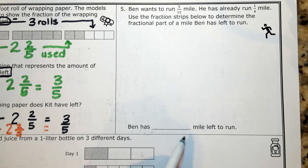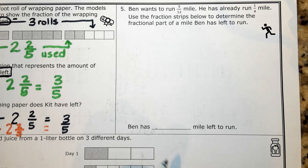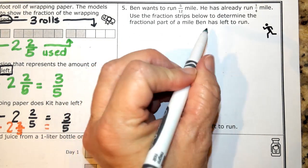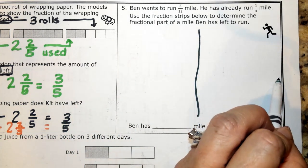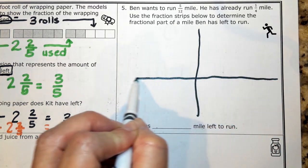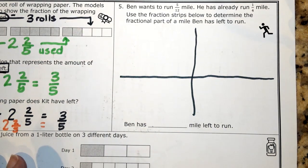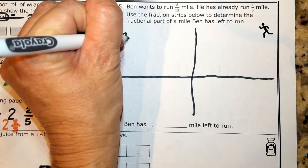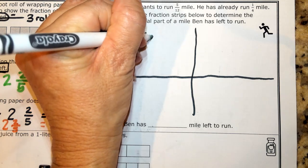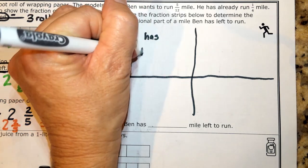So we want to know what Ben has left to run. Here's what I know. I'm going to make a window pane on this one because I think it's easier to think about pictures and estimates. We can just say Ben has blank left.